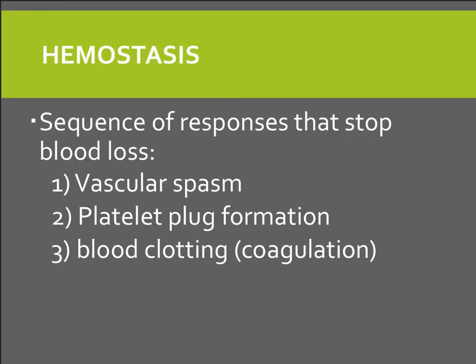Hemostasis is the sequence of events that stops bleeding from a damaged blood vessel. The three mechanisms that reduce the loss of blood from vessels include vascular spasm, platelet plug formation, and blood clotting or coagulation.